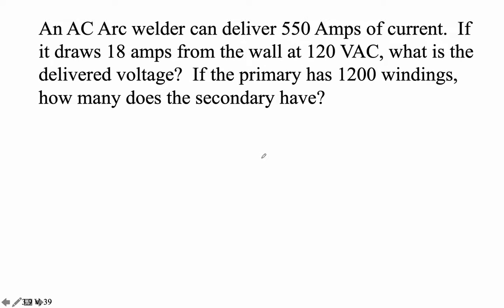Arc welders typically use very low voltages and super high currents, and they melt metal. So an arc welder draws 18 amps from the wall at 120 volts. What is the delivered voltage? If the primary has 1,200 windings, how much does the secondary have?